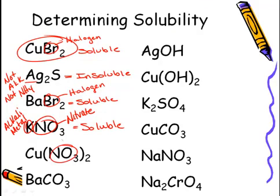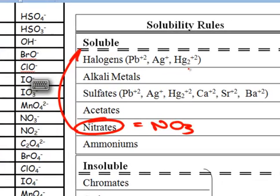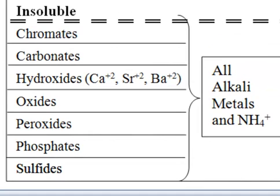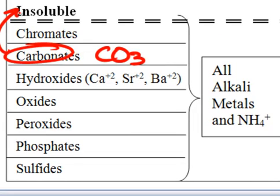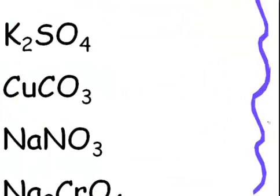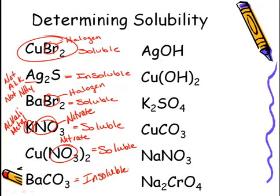Cu(NO3)2: NO3 is nitrate, nitrates are soluble with no exceptions, so copper 2 nitrate is soluble. BaCO3: CO3 is carbonate, carbonates are insoluble except with alkali metals and NH4. Barium is neither, so barium carbonate is insoluble. Now pause the video and determine the solubility of the six compounds in the right-hand column. Here are the solubilities for those six.